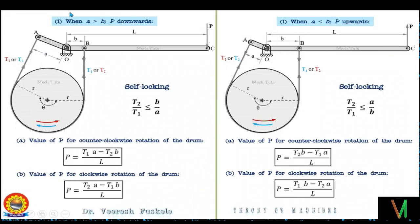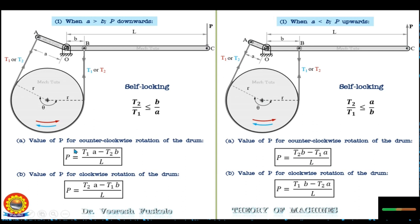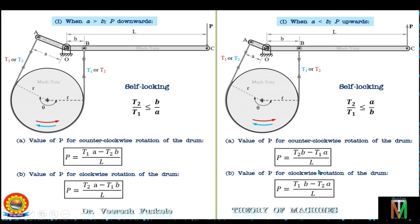Comparing all results: when a > b with P acting downward, for counterclockwise rotation P = (T1·a − T2·b)/L, and for clockwise rotation P = (T2·a − T1·b)/L. When a < b with P acting upward, for counterclockwise rotation P = (T2·b − T1·a)/L, and for clockwise rotation P = (T1·b − T2·a)/L. The self-locking condition when a > b is T2/T1 ≤ b/a, which occurs in clockwise rotation.